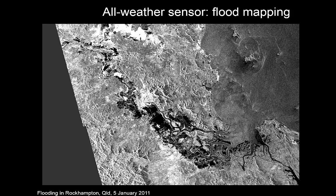This is an example of flooding in Rockhampton, Queensland in 2011, where you can quite clearly see in black open water surfaces. The radar signal — you can work out where the radar came from because you see the effects of foreshortening, the white steep slopes. Then you see lesser slopes on the side of the hill facing away from the radar. These black areas are open water surfaces that were pretty smooth, so the radar sent its pulse, it bounced out away, and very little came back — that's why they look black.